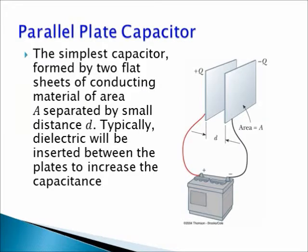We will now watch what happens inside a capacitor when we charge or discharge it. We will focus on the simplest capacitor, which is called a parallel plate capacitor. It is formed by two flat sheets of conducting material with area A separated by a small distance d. Typically, a dielectric will be inserted between the plates to increase the capacitance of such a capacitor.